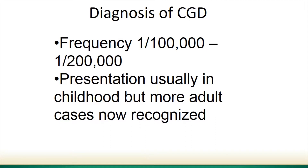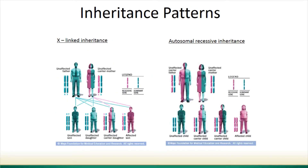The frequency of CGD, as far as we know in North America, is somewhere around one in 100,000 to one in 200,000. Presentation is usually in childhood, but there are a lot more adult cases being recognized — a testament to physicians recognizing it, but also patients living longer with the disease and sometimes going undiagnosed.